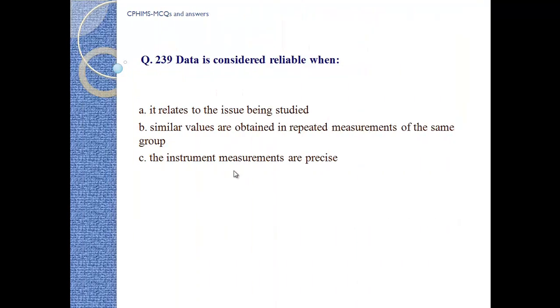Question number 239: Data is considered reliable when: a) It relates to the issue being studied, b) Similar values are obtained in repeated measurements of the same group, c) The instrument measurements are precise. Answer: b) Similar values are obtained in repeated measurements of the same group.